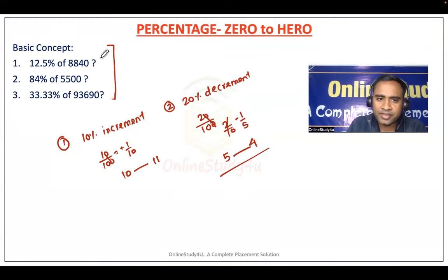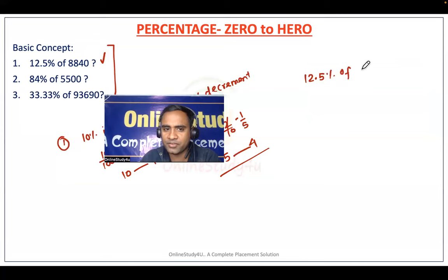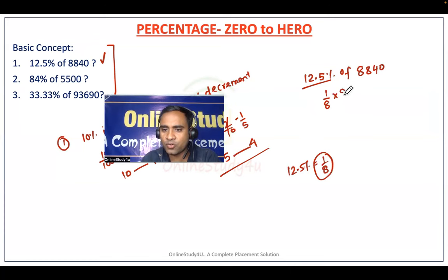They might ask you to calculate 12.5% of 8840. You should know that 12.5% is nothing but 1/8. So 1/8 into 8840 — you will be able to solve it very quickly in the examination.